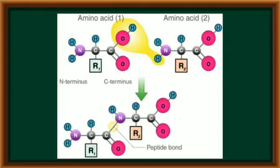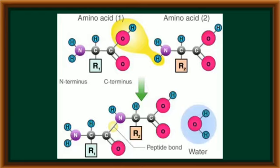During this peptide bond formation, when the OH group of one amino acid and hydrogen group of the second amino acid react, they are removed in the form of water. In this way, peptide bond formation takes place between two neighboring amino acids during translation. Like this, many amino acids are attached to each other with peptide bonds and become protein. Due to having many peptide bonds in protein, the protein molecule is also called polypeptide chain. In this way, the translation process occurs in both prokaryotic cell and eukaryotic cell.